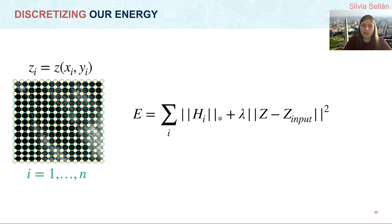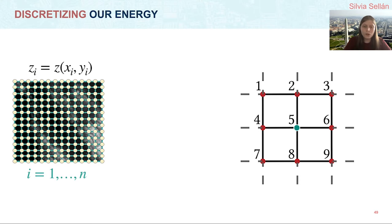Our only remaining challenge now is to discretize H, the Hessian matrices at each point in the pixel grid. Now for a square pixel grid like this, we can approximate the Hessian at the green point number 5 here as a linear combination of the height values in all of its immediate neighbors. We won't get into detail into how we do this; we do it using quadratic fitting and we refer to the rest of the paper.